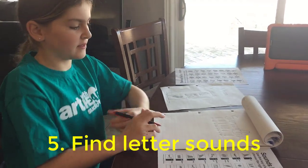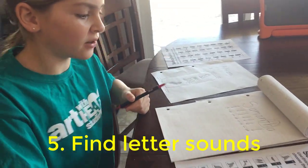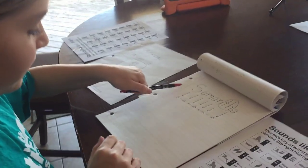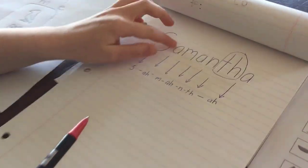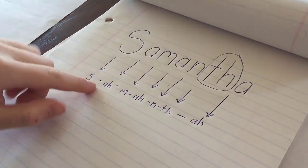Step 5 is to find the sounds that you're going to use, so you drag them down, and you find what it sounds like. So instead of doing A, you do A-H, because that's how it sounds.